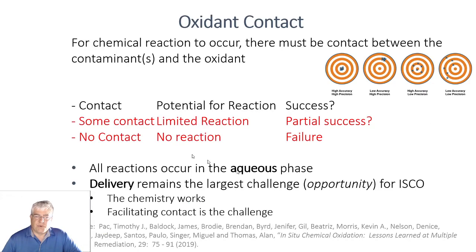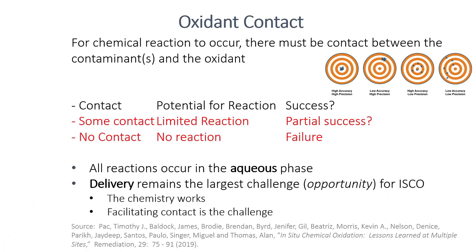Why is this important? For the chemical reaction to occur there must be contact between the contaminant and the oxidant. If you get contact, there's a potential for that reaction to occur, and it is likely to occur if you've done the selection process correctly. However, if you do not provide the contact, there is no potential for a reaction and certainly you will have a failure. Some contact means limited reaction — maybe partial success, or maybe not, depending upon what happens in the subsurface.